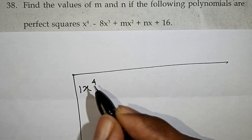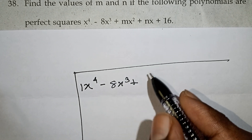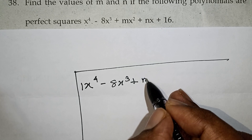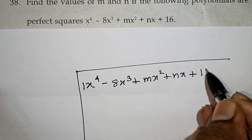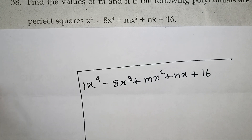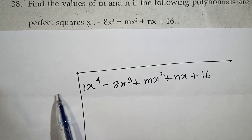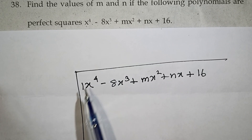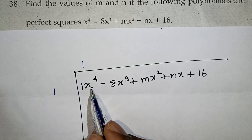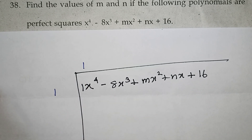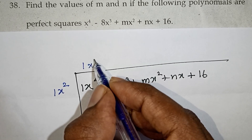So the expression is x to the power 4 minus 8x cubed plus mx squared plus nx plus 16. Now let's take a look at the square root long division method. You have to find the first term. If you take x squared and x squared, then you get x squared as the first term of the quotient.